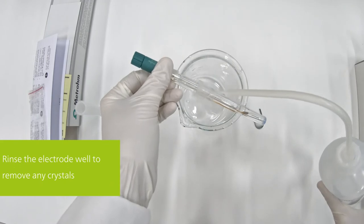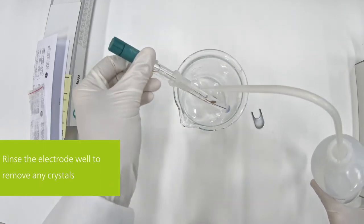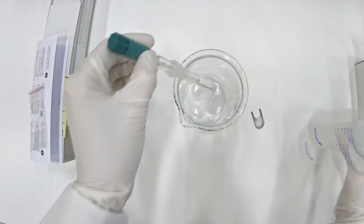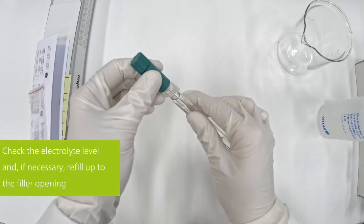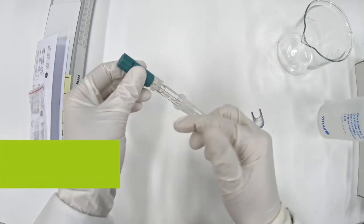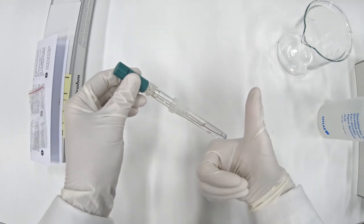Rinse the electrode well from the outside to remove any foreign electrolyte crystals. Check the electrolyte filling level. It should be up to the opening. Now the sensor is ready for use.